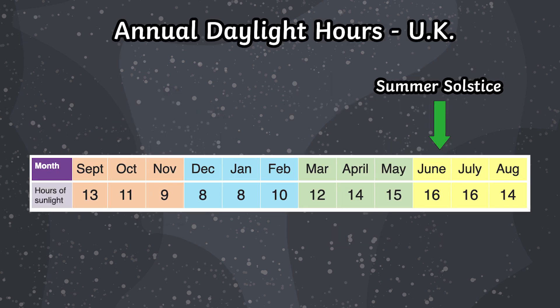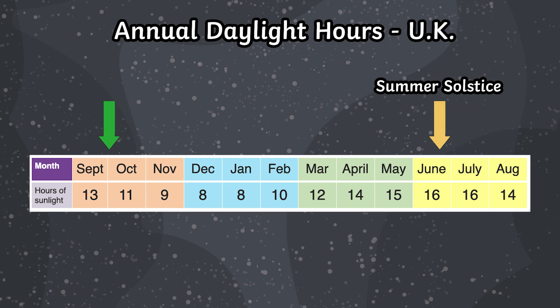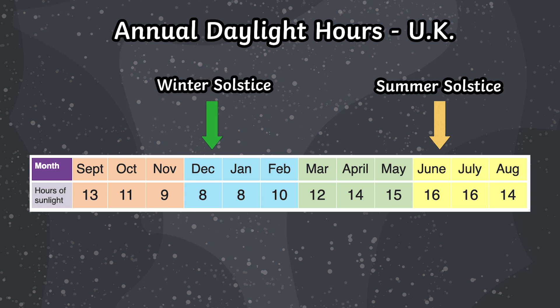Every day after the solstice, the amount of daytime will start to reduce by approximately two to three minutes a day until the winter solstice occurs, which is the shortest day, and this cycle repeats annually.